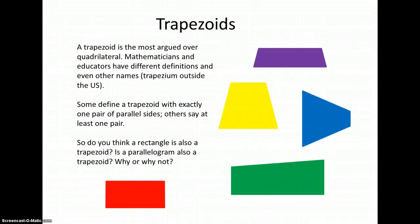A trapezoid is the most argued over quadrilateral or shape in geometry. Mathematicians and educators sometimes have different definitions, and sometimes even different names, if you live outside the United States. Some people define a trapezoid to have exactly one pair of parallel sides.